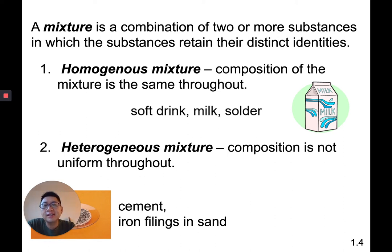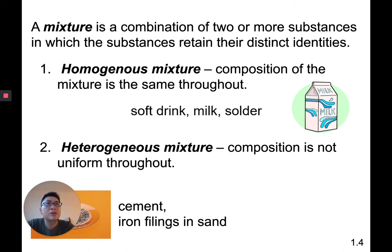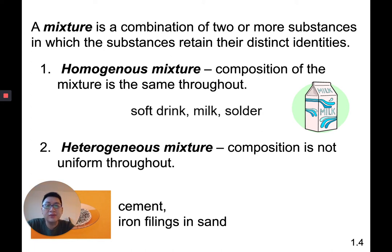A heterogeneous mixture is not the same throughout. Cement, iron filings, and sand is a heterogeneous mixture. Another good example is a salad — there's lettuce, tomatoes, croutons, cheese — you can obviously see the different parts. You can pick out tomatoes if you don't like them, or literally take out the croutons. It is not the same throughout, but it is a mixture.